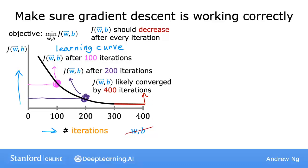By the way, the number of iterations that gradient descent takes to converge can vary a lot between different applications. In one application, it may converge after just 30 iterations. For a different application, it could take 1000 or 100,000 iterations.